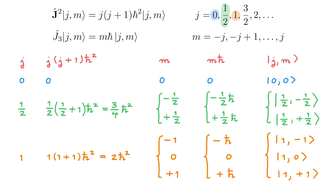You can now see how this would continue for other allowed values of j and the corresponding m, so you should be able to build basically any combination that you need.